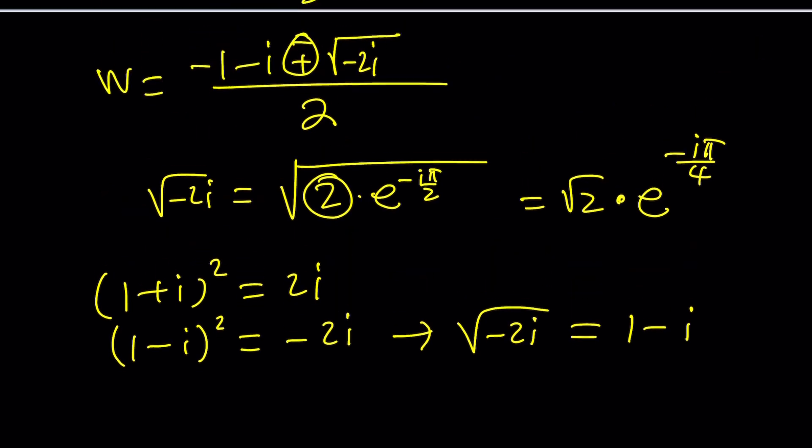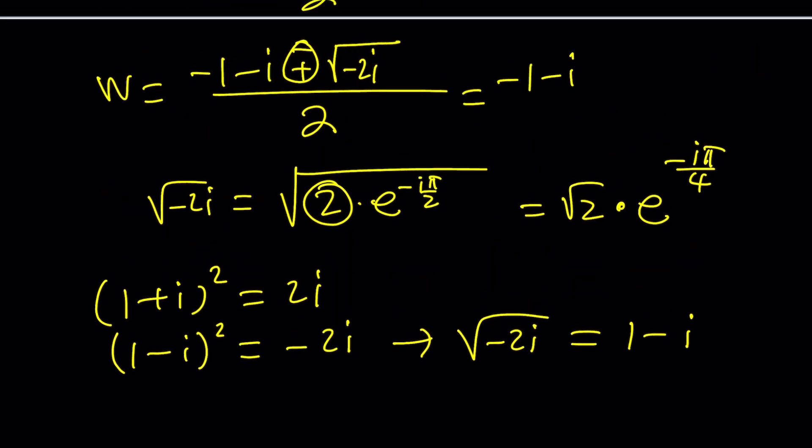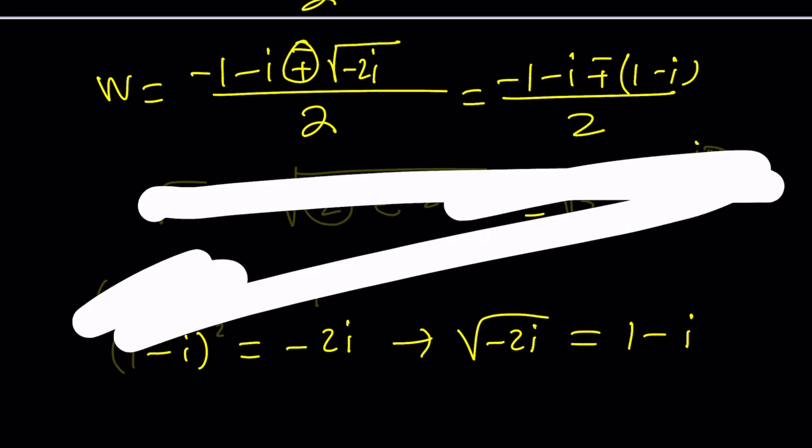So here's what w becomes. Negative 1 minus i plus minus the square root of negative 2i, which is 1 minus i. And the whole thing is divided by 2. Let's go ahead and clear this area so we can write all the solutions. Okay?